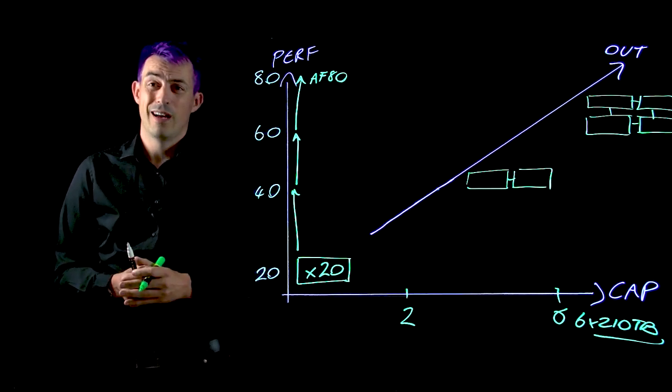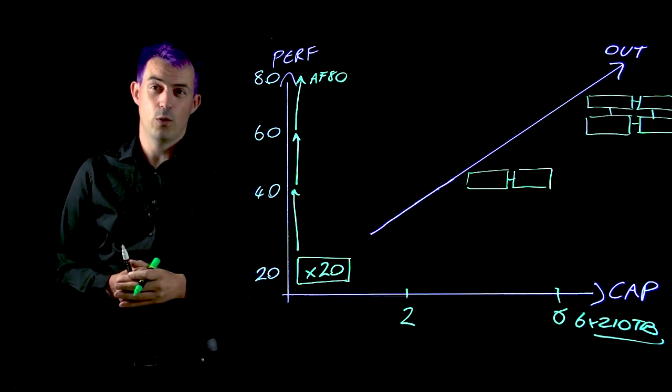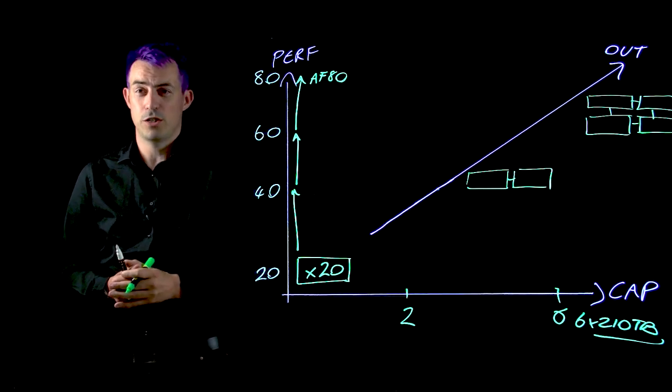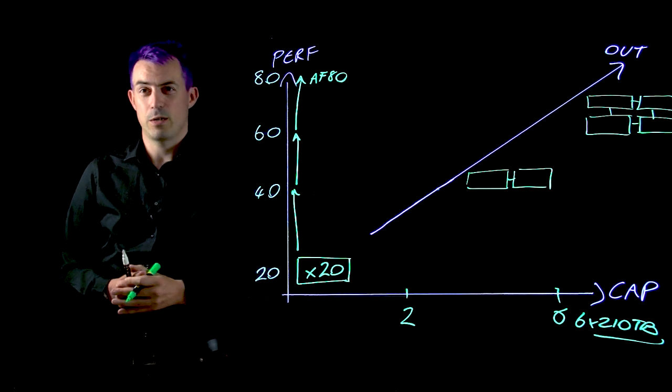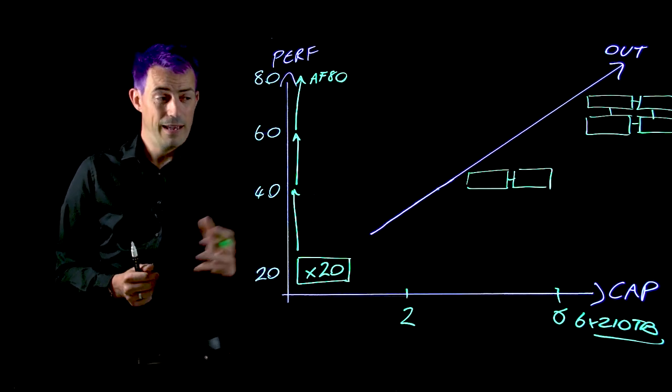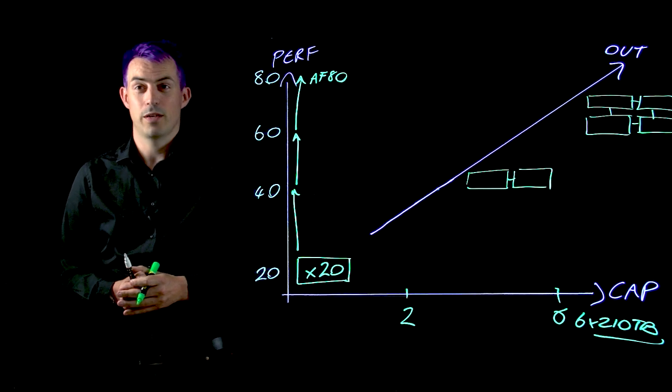If I want six shelves on a hybrid, I can then multiply that by four to give me 24 expansion shelves under a single management GUI, allowing me to manage over a petabyte of storage. Now if that isn't enough for most workloads, I'm not sure what is.